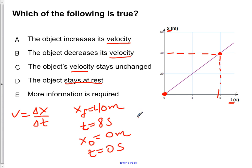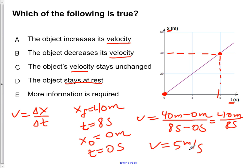If we now calculate out what our velocity is, also the slope of this graph, we would see that our velocity is equal to 40 meters minus 0 meters over 8 seconds minus 0 seconds. Which would give us 40 meters over 8 seconds or a velocity of 5 meters per second.